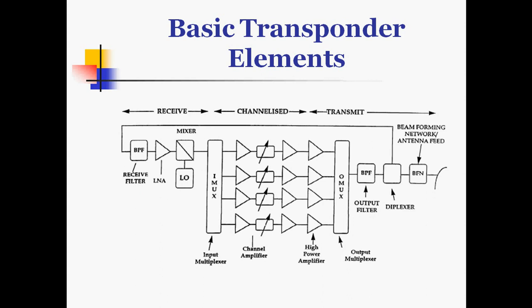The basic transponder elements include a receiver part, channelizer, and transmit part. In the receiver part, there is a bandpass filter, then a low noise amplifier, then a MUX used with a local oscillator frequency to mix signals with the input. An input multiplexer feeds different channels to channel amplifiers, then to a high power amplifier and output multiplexer, then to an output bandpass filter, duplexer, and beam forming network or antenna feed connected to the downlink antenna.